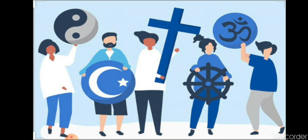The next important type is religious discrimination. Sometimes, people belonging to a particular religion consider other religions to be inferior. They try to impose their own thoughts and views on others — this is called religious discrimination. When people of the so-called superior religion consider themselves superior and start treating others as inferior, such an attitude leads to a lot of discrimination. It often leads to violence and extreme hatred, where people start fighting among themselves just on the basis of their religion.